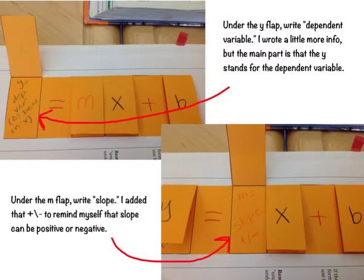Under the Y flap, write dependent variable. I wrote a little more information, but the main part is that the Y stands for the dependent variable. I also just wrote like Y equals, and then I wrote changes based on X. That's the delta sign for changes.